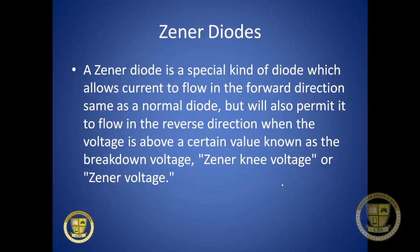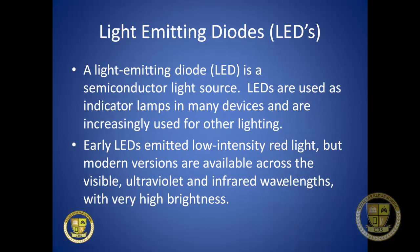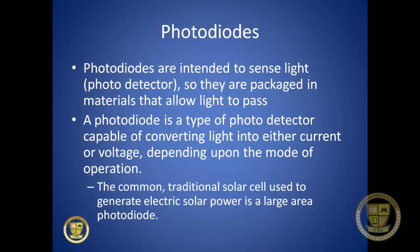A zener diode allows current to flow in the forward direction like a normal diode, but also permits current to flow in the reverse direction when voltage exceeds the breakdown voltage, also known as the zener voltage. LEDs are a special type of semiconductor light source used as indicator lamps in many devices. Early LEDs emitted low-intensity red light, but modern versions span visible, ultraviolet, and infrared wavelengths with very high brightness. Photodiodes are photodetectors packaged in materials that allow light through, capable of converting light into current or voltage.